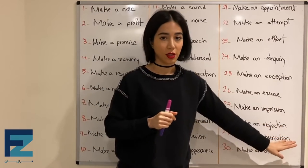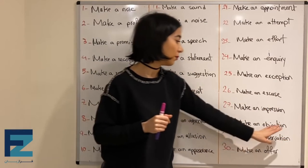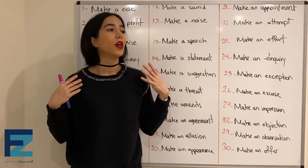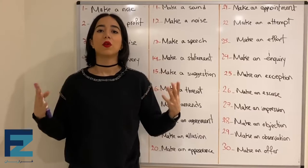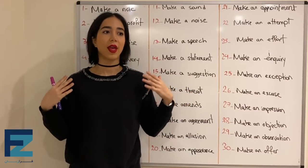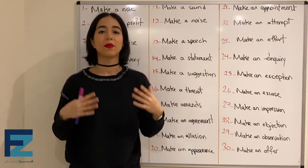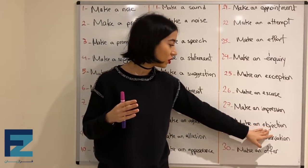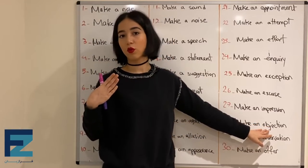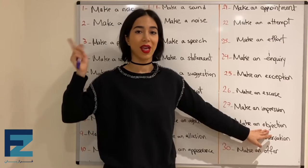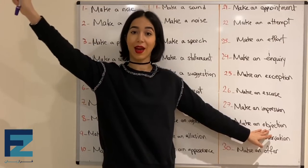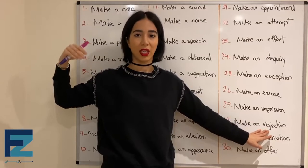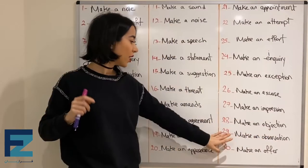Number twenty-eight: make an objection — means to object, to say that you disagree with something, to say that you do not accept something. اعتراض کردن یا مخالفت کردن — بگی که با یه چیزی مخالفی.